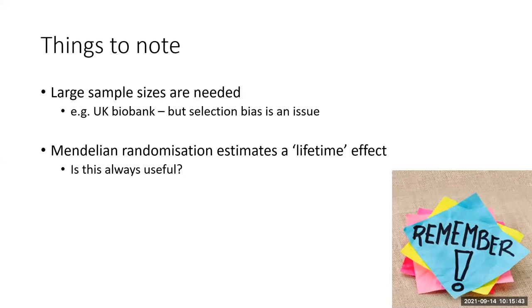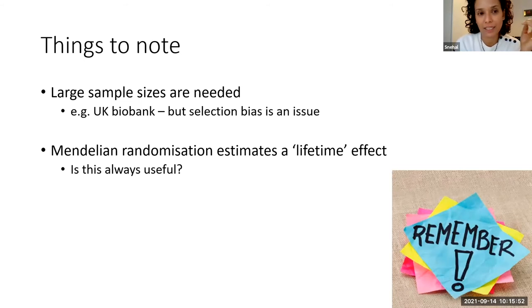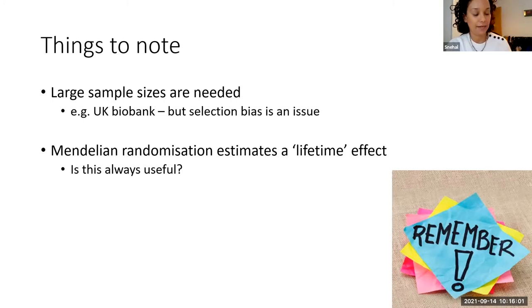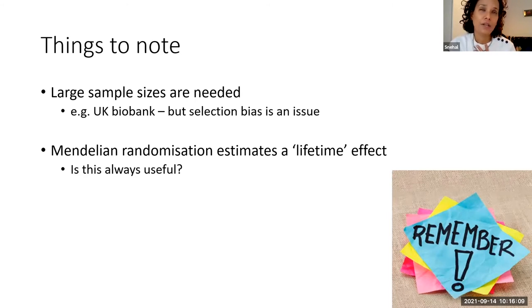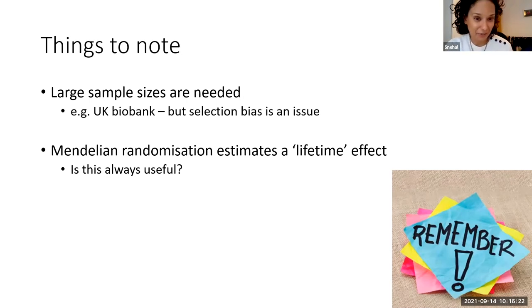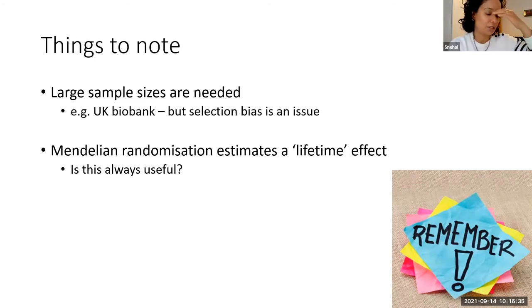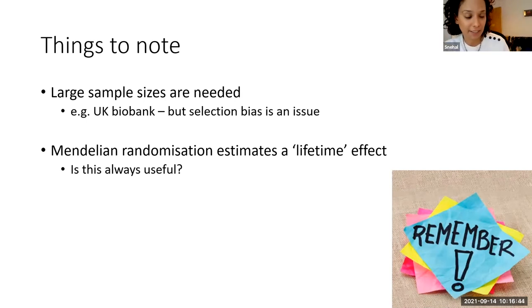A couple of things to note about Mendelian randomization. First, the effect of your SNPs on your exposure tends to be small — genetic effects tend to be small. To ensure enough power, you need a large sample size, and that's where studies like UK Biobank come into their own — genetic and phenotypic information on over half a million people. On the other hand, UK Biobank is a selected population — generally better off, non-smokers, higher social class than the general UK population — so there are selection bias issues to think about.